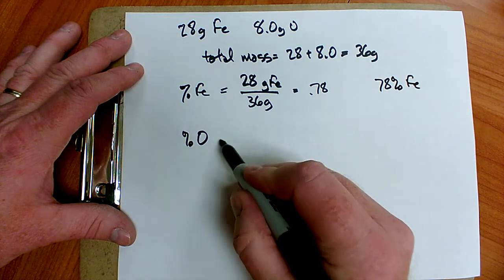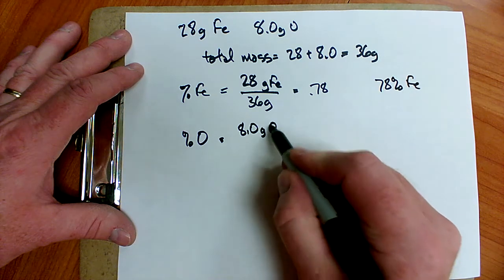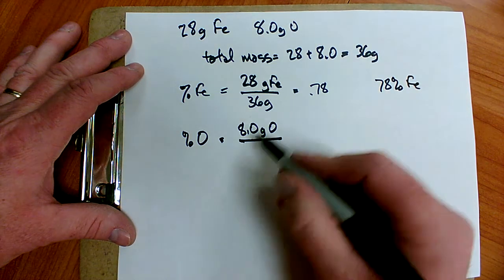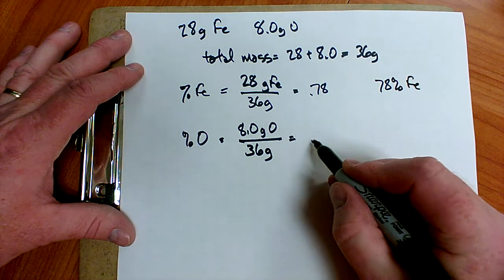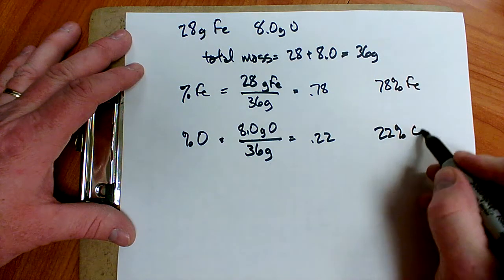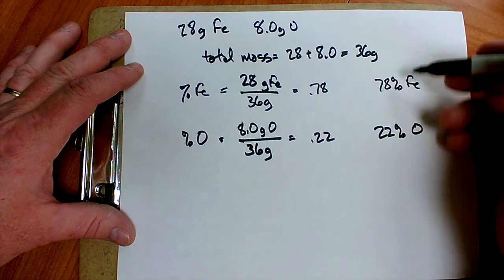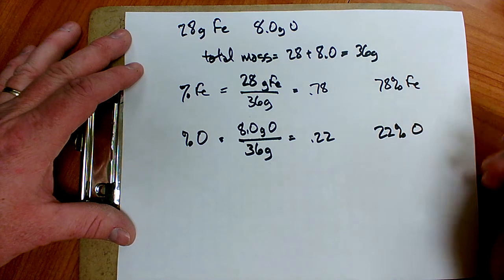To find percent oxygen, I take the mass of the oxygen, 8.0 grams of oxygen, divide by the total mass, 36 grams in my sample, and I get 0.22, or 22 percent oxygen. And again, you'll notice the two numbers do add up to 100 percent.